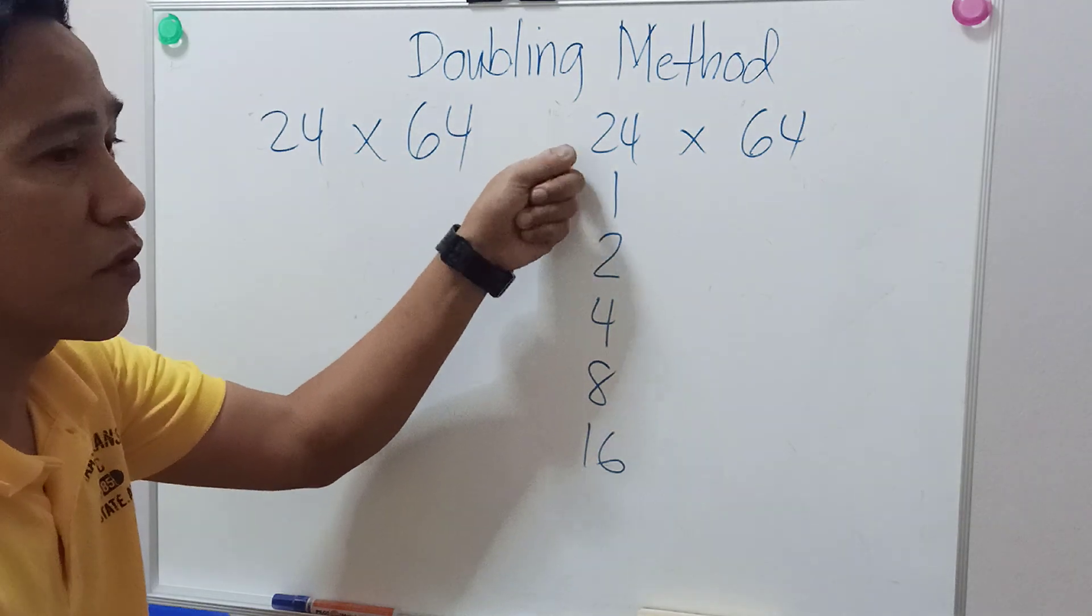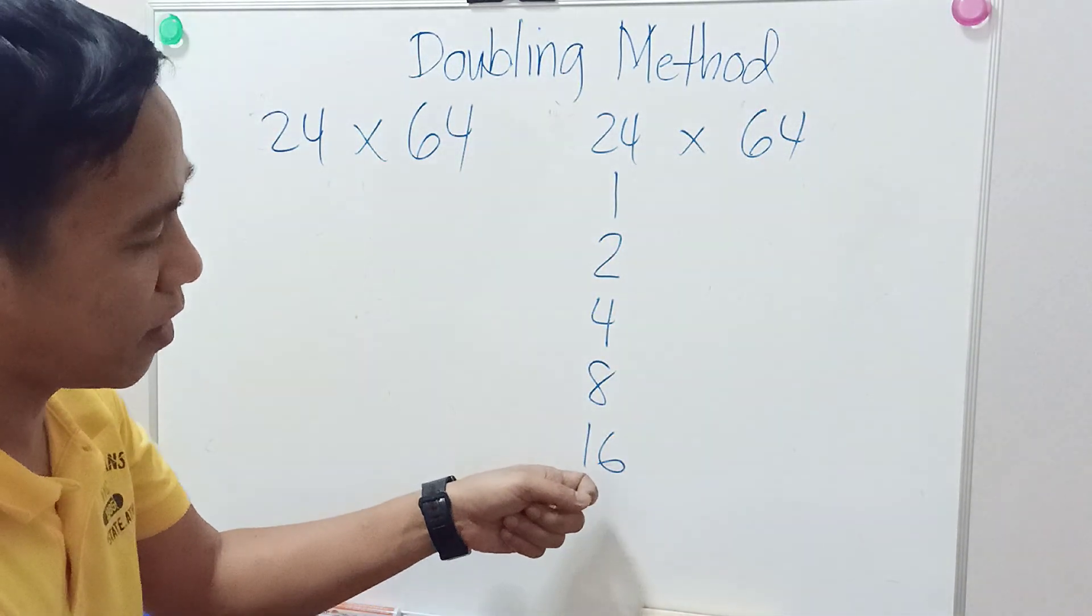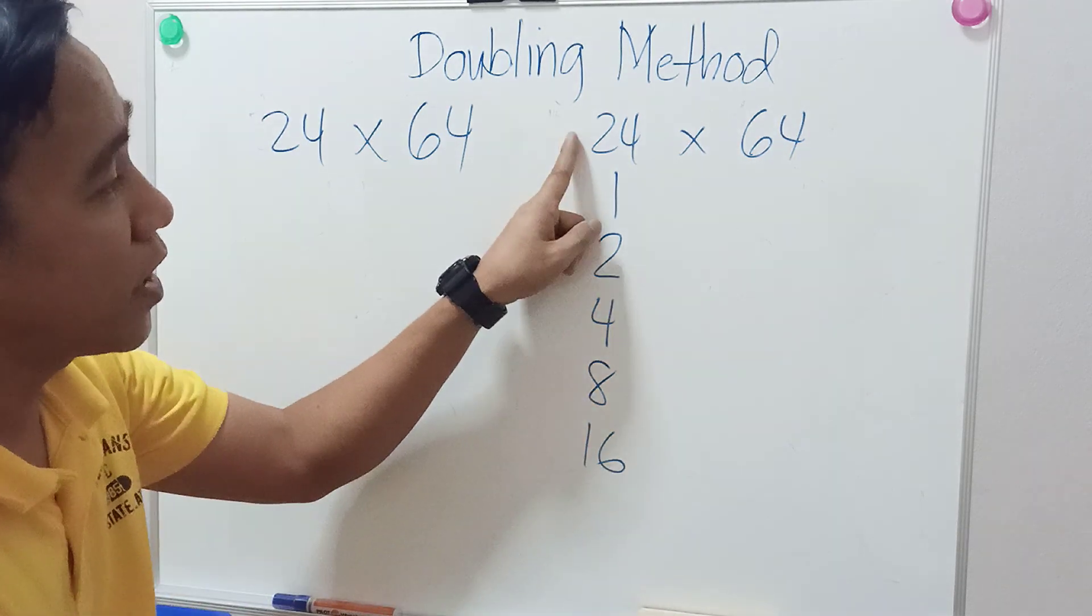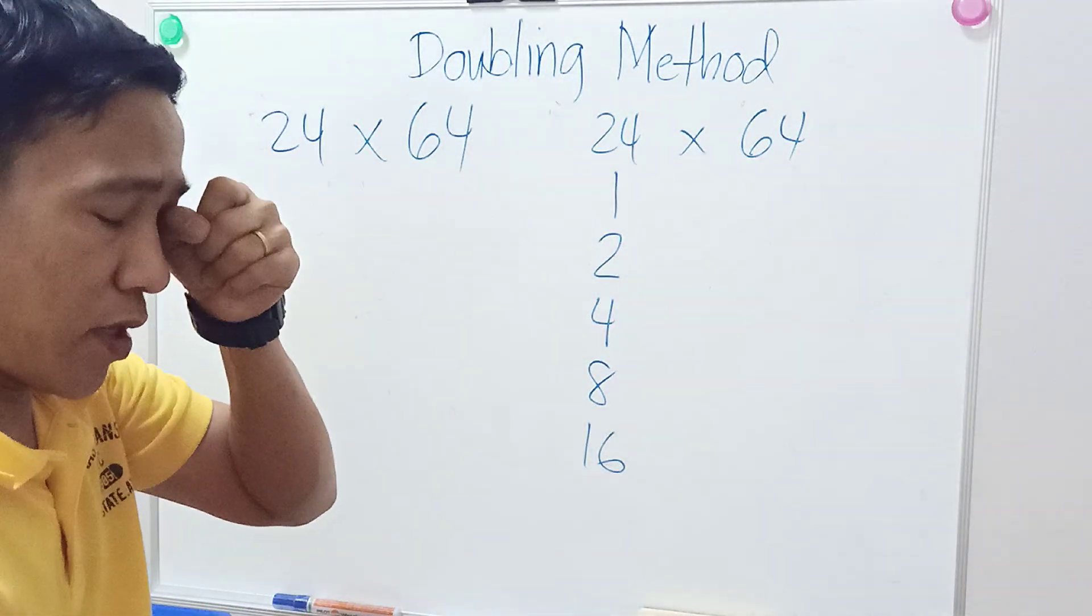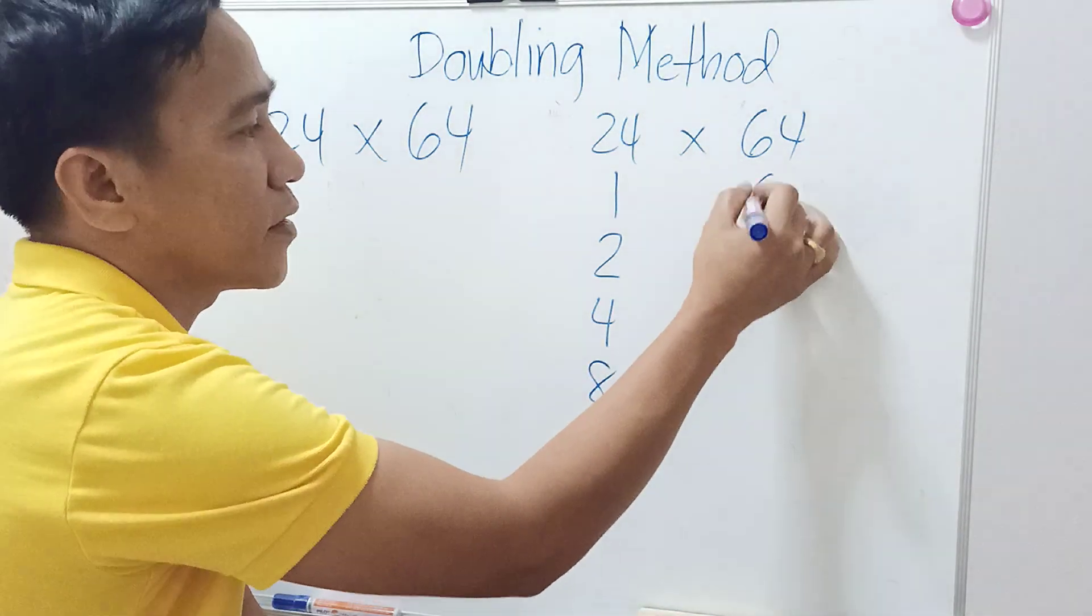We have to stop because it's only 24. If we keep moving, double of 16 is 32, and that is more than 24, so we have to stop.